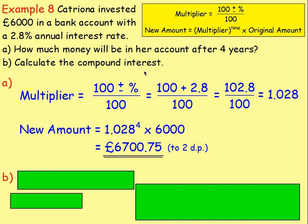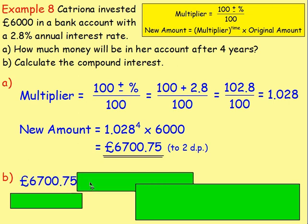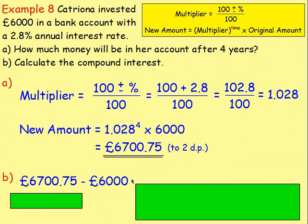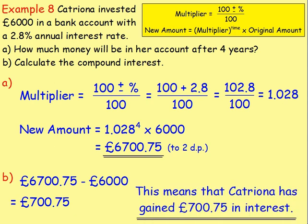However, the question is then saying, work out the compound interest. Surely this is the compound interest? No — that's the amount of money in the account. So, to work out just the interest that you have received — the free money that the banks gave you — you were sitting there with £6,700.75, but take away the amount of money that you started with, the £6,000 that you put in. That means there has been an increase of £700.75. This means that Katrina has gained £700.75 in interest.